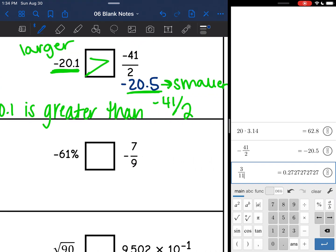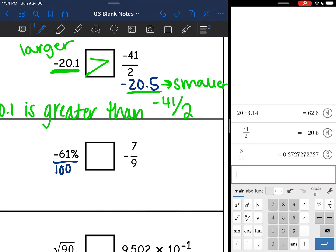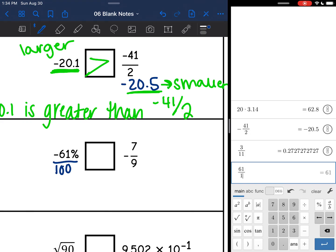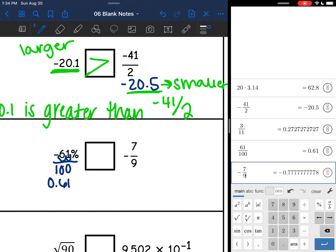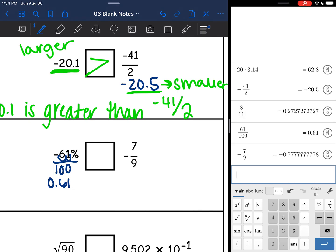Negative 61%. Remember, I need to divide by 100. And that would be 61 divided by 100 is 0.61. You can also just move the decimal back twice. And then negative 7 over 9, I need to convert that. And I get negative 0.7 repeating. So I'm going to round that to negative 0.78.